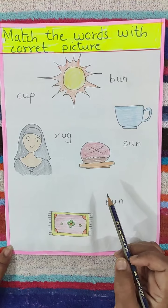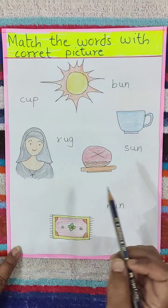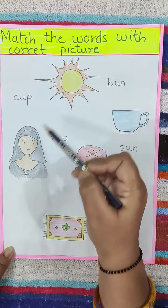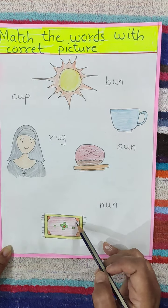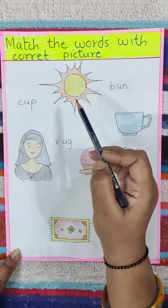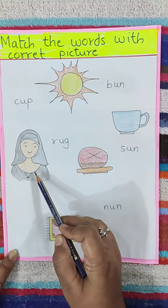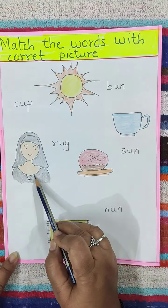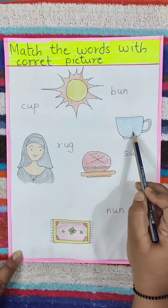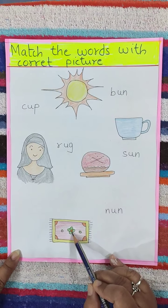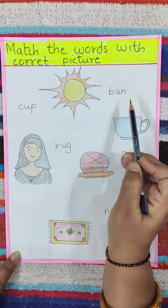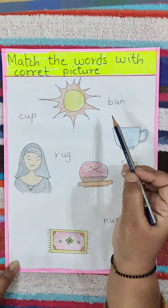Now see here children. Here is the last worksheet: Match the words with the correct picture. Here some pictures are being made. You have to match them with the correct picture. Here is the picture of sun, here is the picture of nun, here is the picture of bun, here is the picture of cup, and here is the picture of rug. So we will match the pictures with the correct word. Okay?